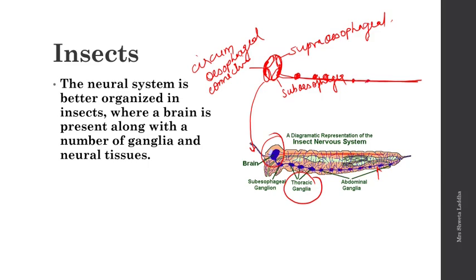There are seven abdominal ganglia in insects. From these thoracic and abdominal ganglia, numerous nerves arise and innervate different parts of the body. The nerve cord is double — they have a ventral double ganglionated nerve cord with three thoracic ganglia and seven abdominal ganglia, with nerves innervating the dorsal, ventral, and lateral sides of the body.